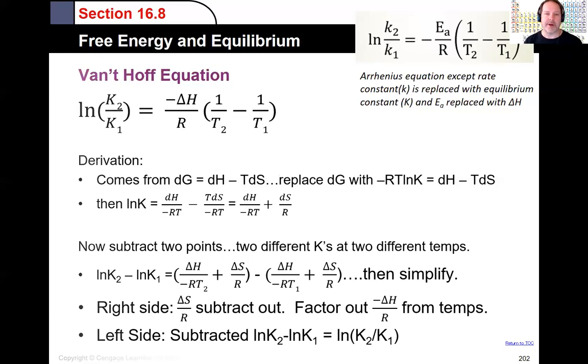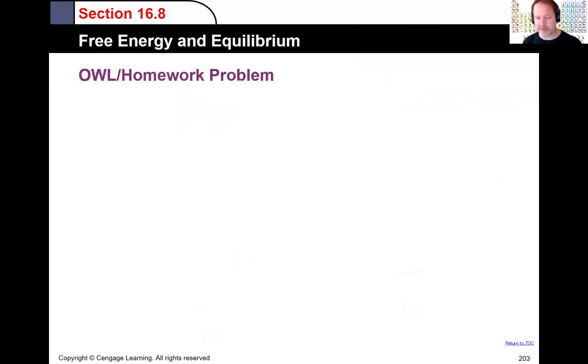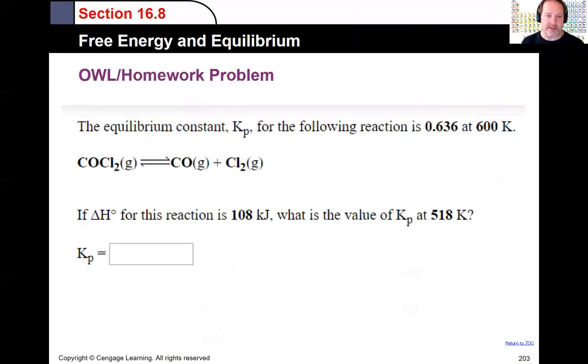All right, but what does the problem look like that you may be working on? Here's a particular problem. The equilibrium constant Kp for the following reaction is 0.636 at 600 Kelvin. The reaction is given. The enthalpy for this reaction is a positive 108 kilojoules. What is the equilibrium constant at 518 Kelvin?